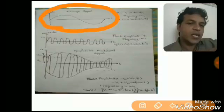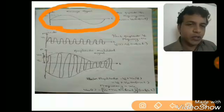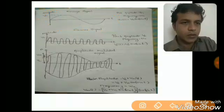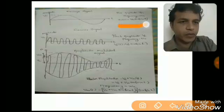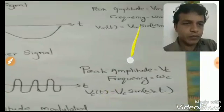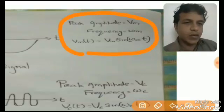The general procedure to represent a sinusoidal waveform in equation format is: amplitude into sine of the frequency. For this message signal, the amplitude is Vm and the frequency is omega m. So we represent it in equation form as: Vm(t) = Vm · sine(omega m · t).